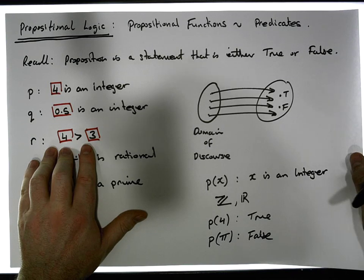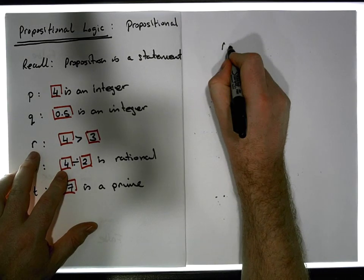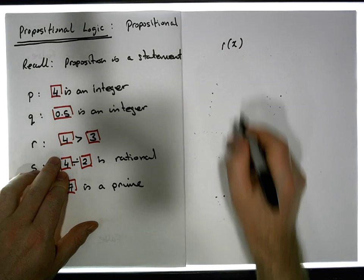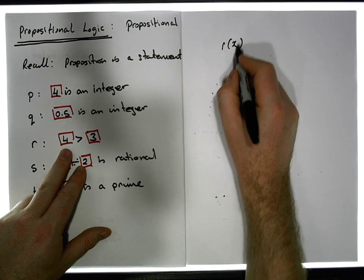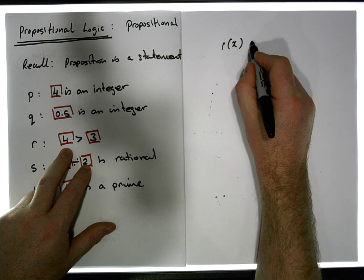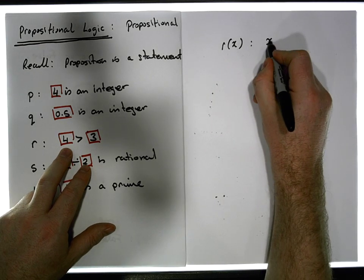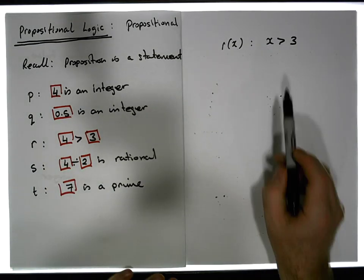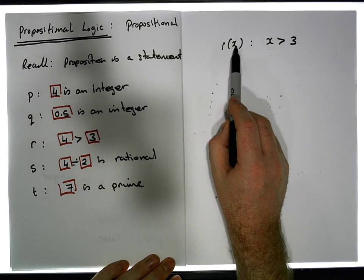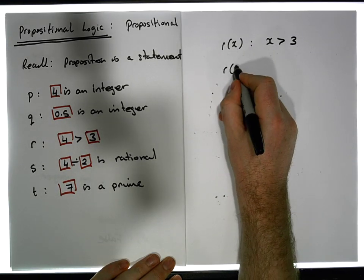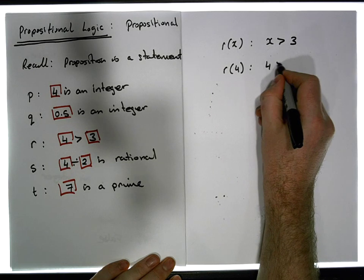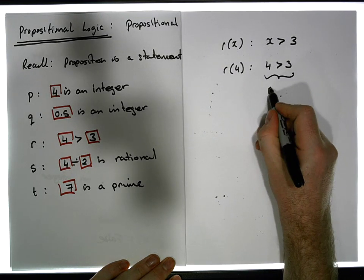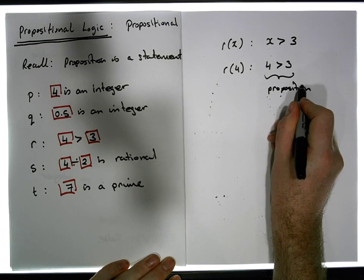Now let's convert this to another predicate. Let's call it r(x), where the domain of discourse is the integers, and r is defined as: x is greater than 3. When we evaluate r(4), we get the proposition '4 is bigger than 3', which is now an actual proposition.